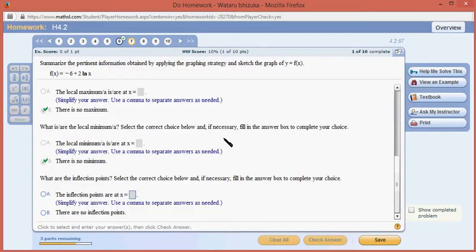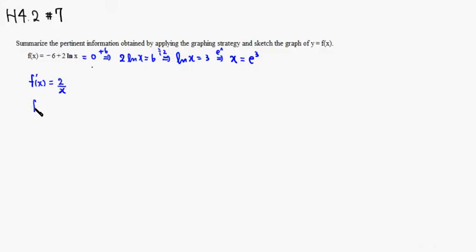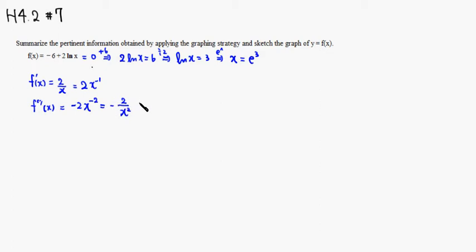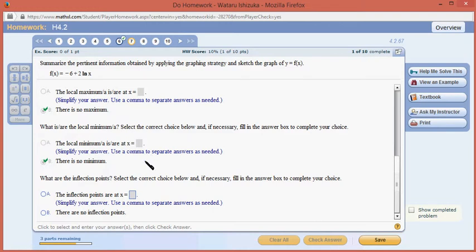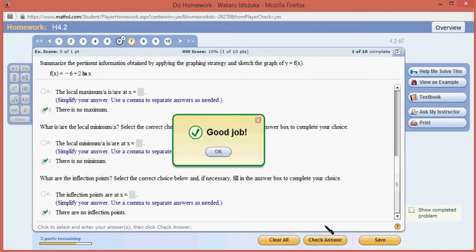For inflection points, we need to take the second derivative. We rewrite f prime of x as 2x to the negative 1, so the second derivative is negative 2x to the negative 2, which is negative 2 over x squared. This is always negative, so the function is concave down all the time. Therefore there is no inflection point.